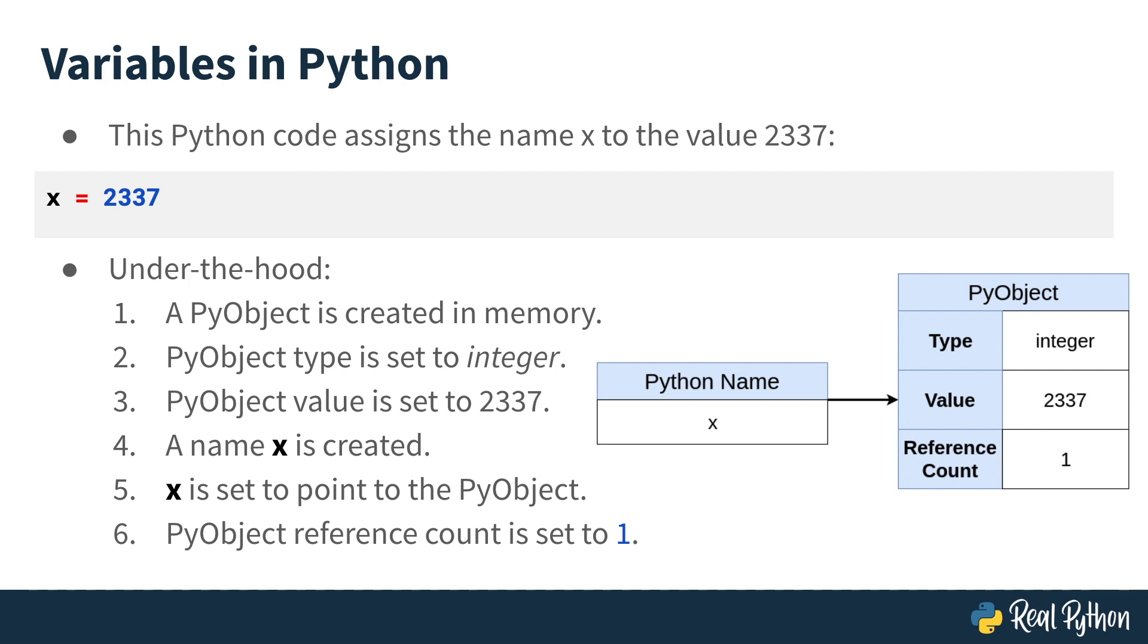Because there's now a name referencing it, the PyObject's reference count increases to 1. This shows that the Python name x doesn't actually own any space in memory with a value. It merely references a space in memory called a PyObject, and somewhere in that PyObject is the actual value.